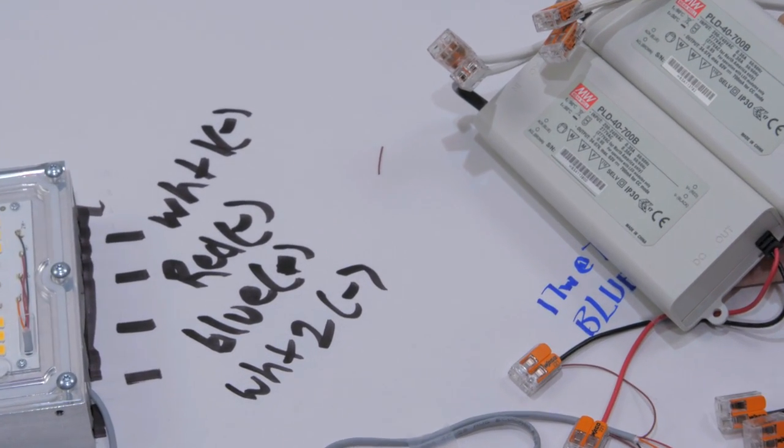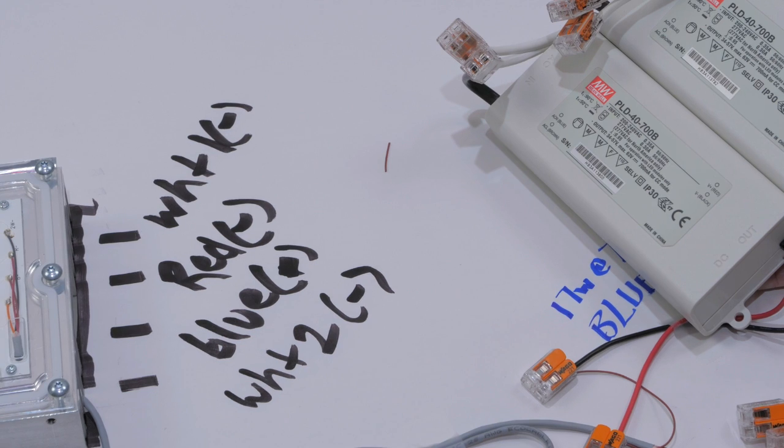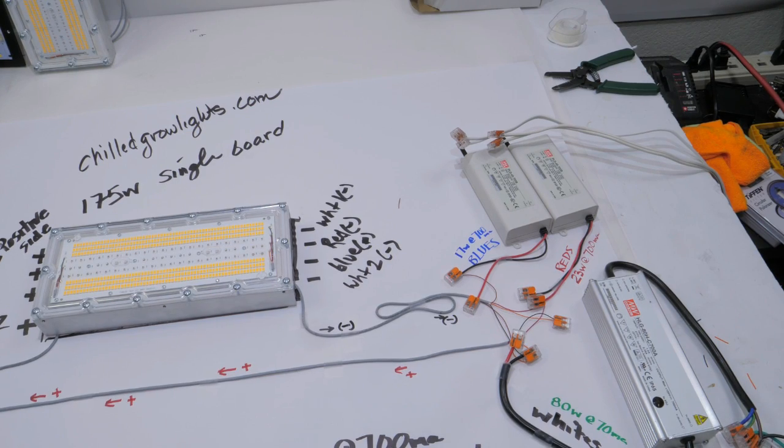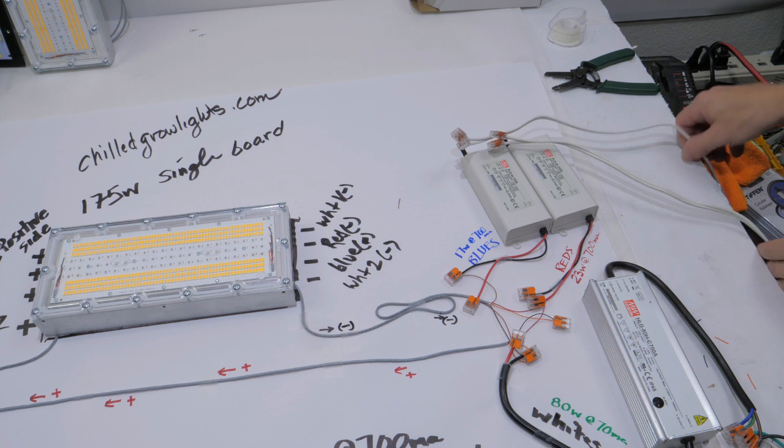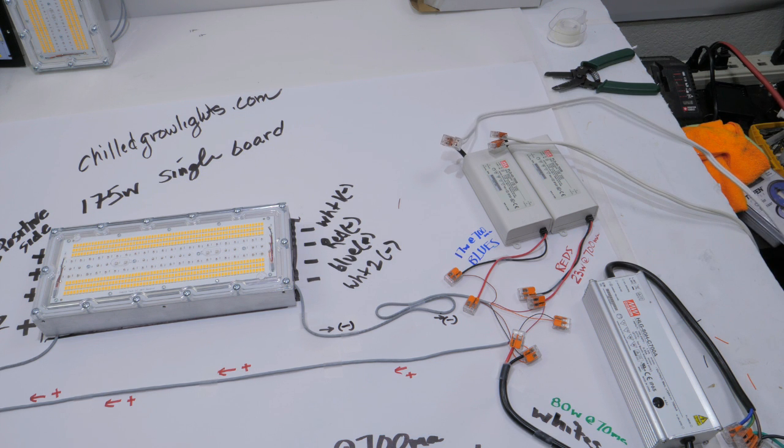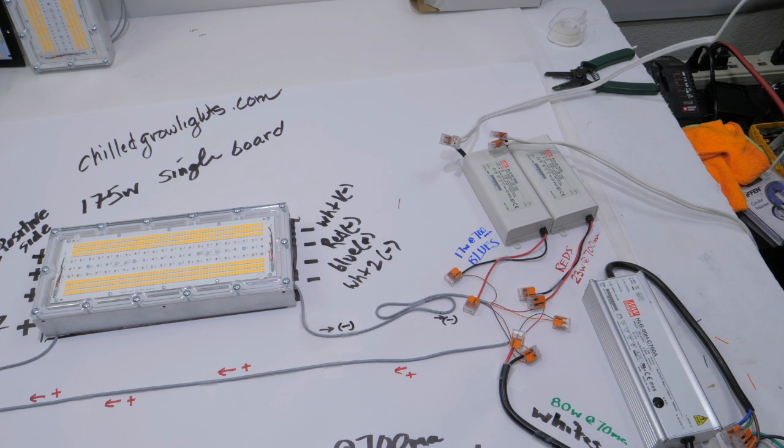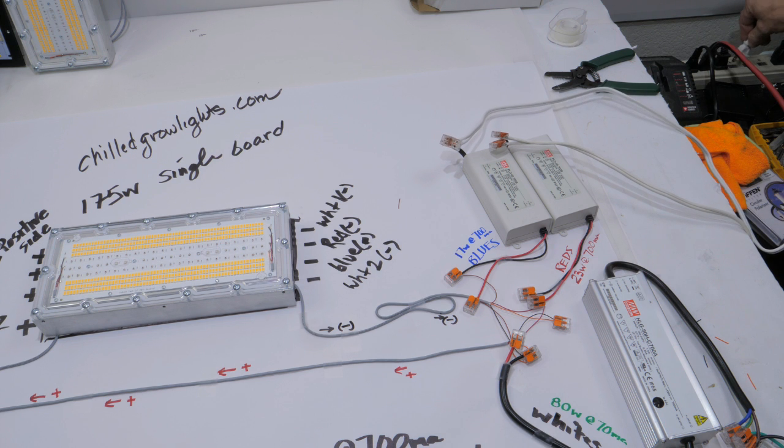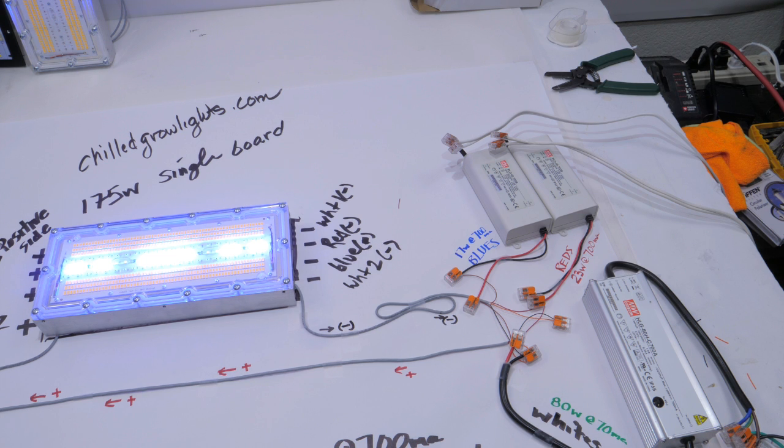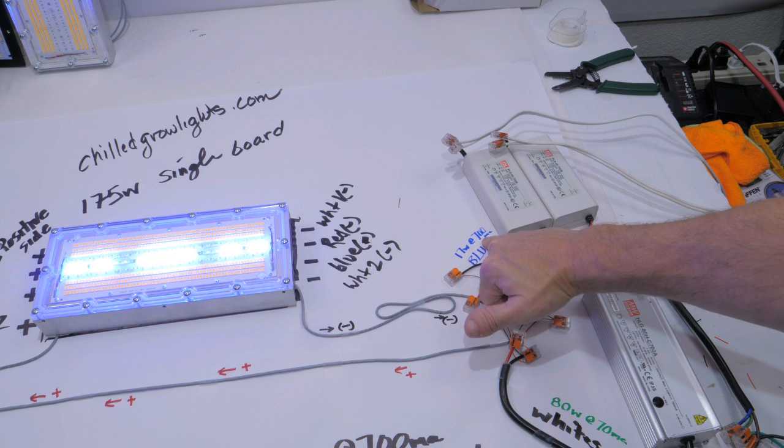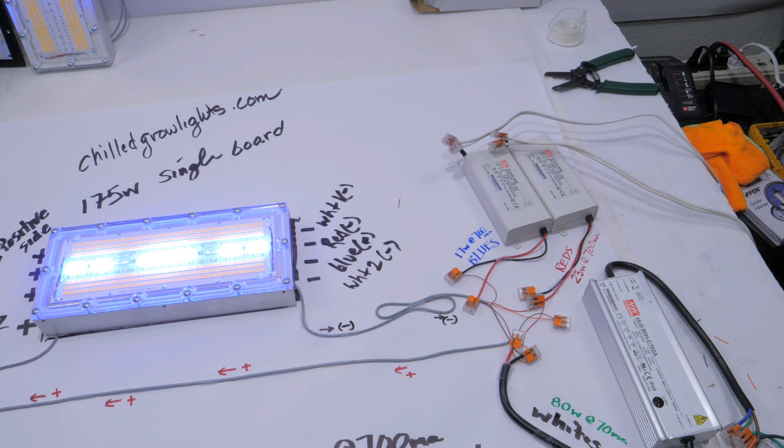If you're doing the quick math running 1050 milliamp drive current, which is what's suggested, you just take the voltage of the channel and multiply it by one. For example, the blue channel 27 volts, multiply that by 1.05, you're getting about 27 watts worth of blue. Here I'm running it about 17 watts at that lower current.